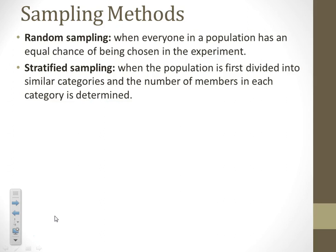You want to represent all the class levels equally. You split them up, then you pick a certain number of freshmen, a certain number of sophomores, etc. So that's stratified: splitting them into groups and then choosing a certain number from each group.